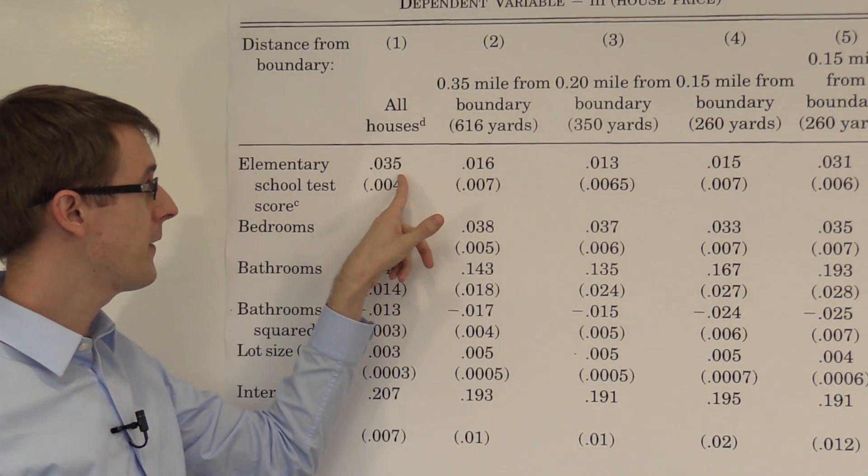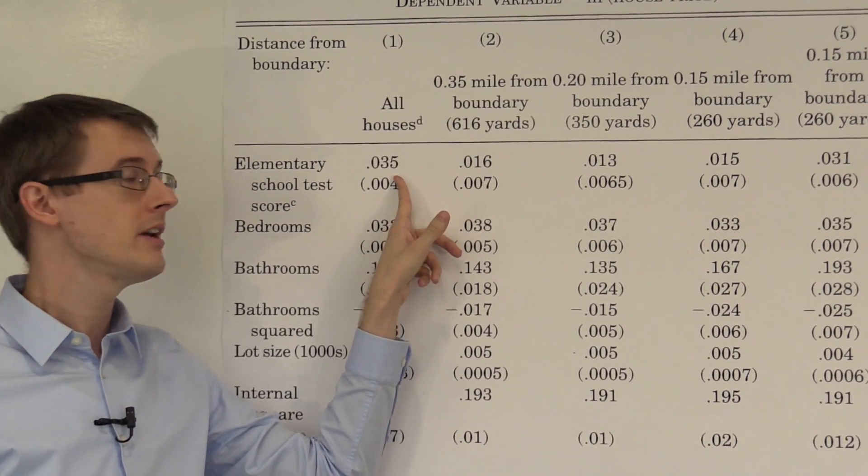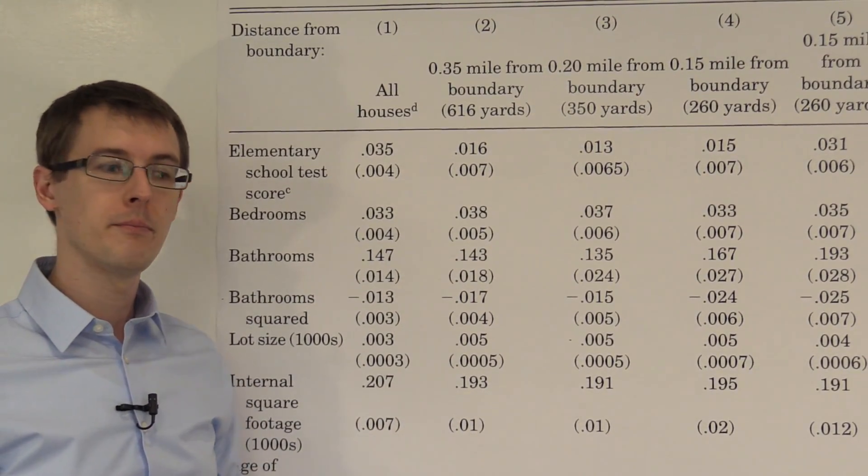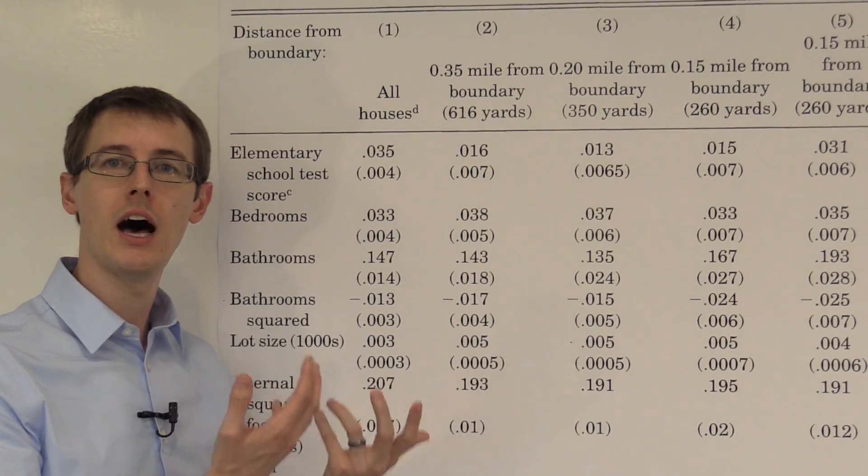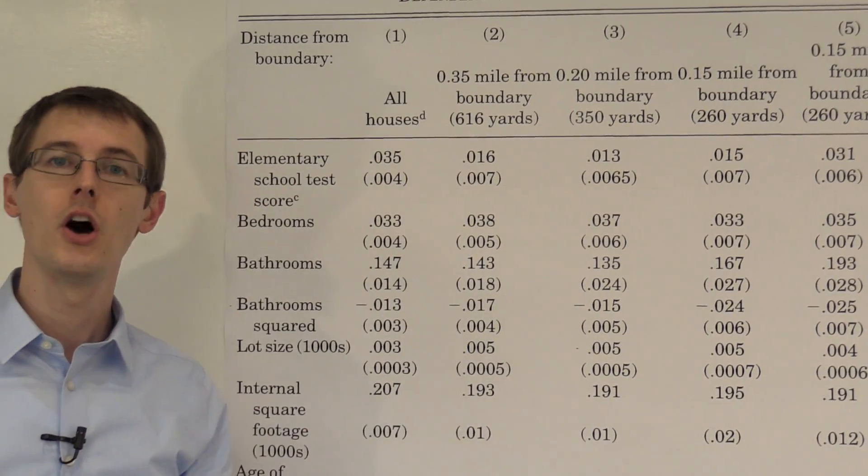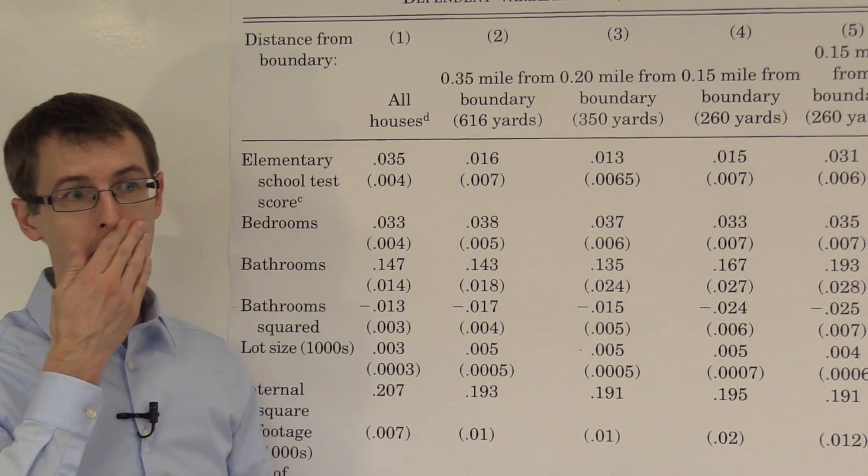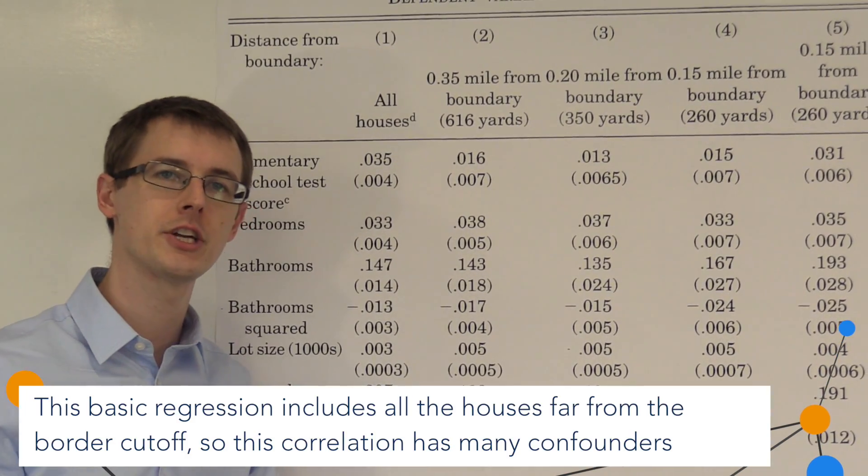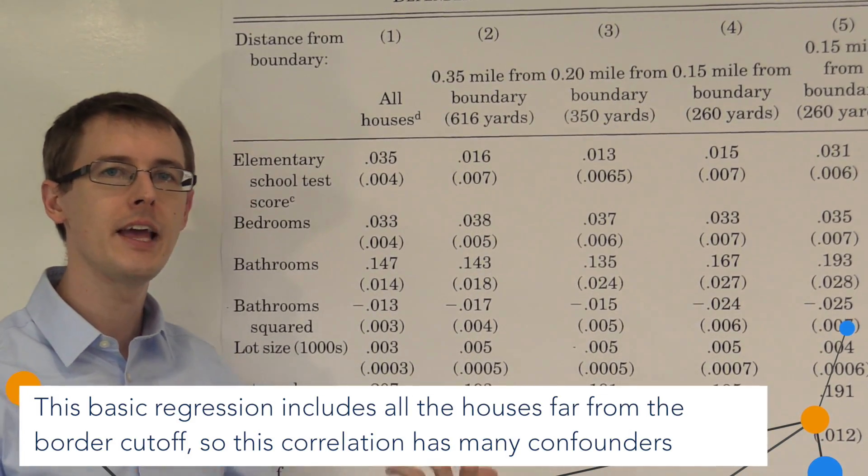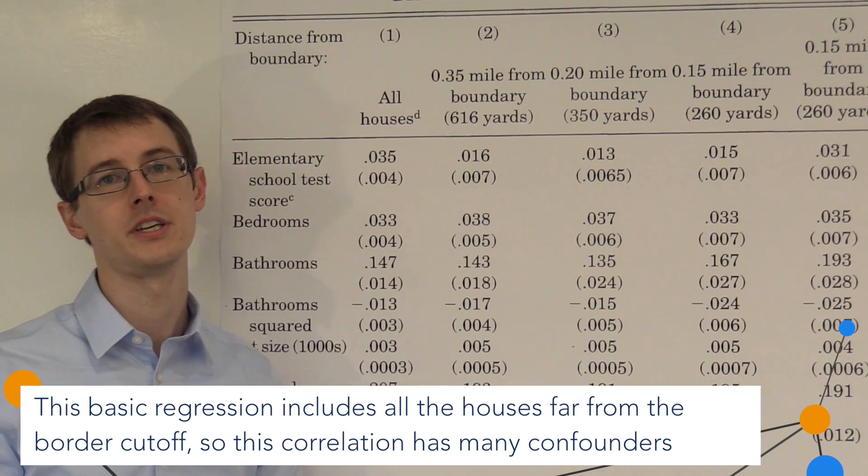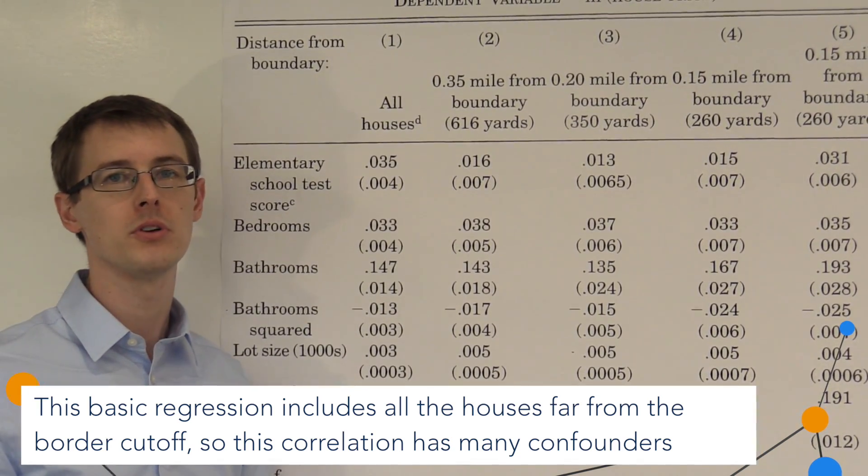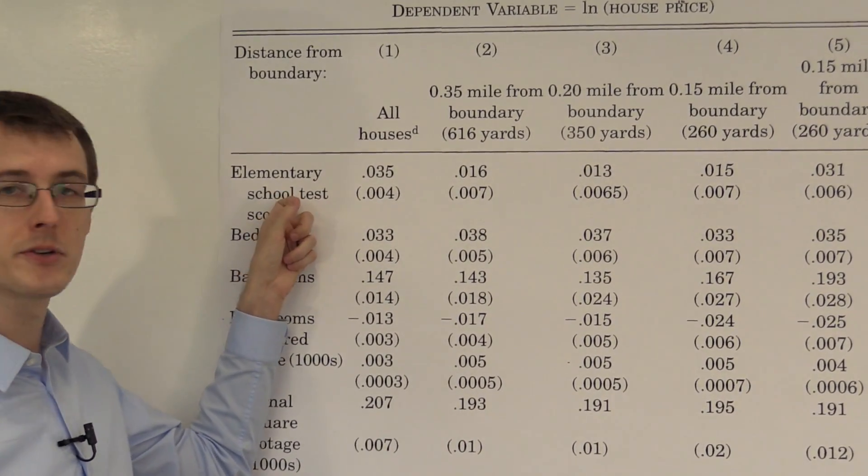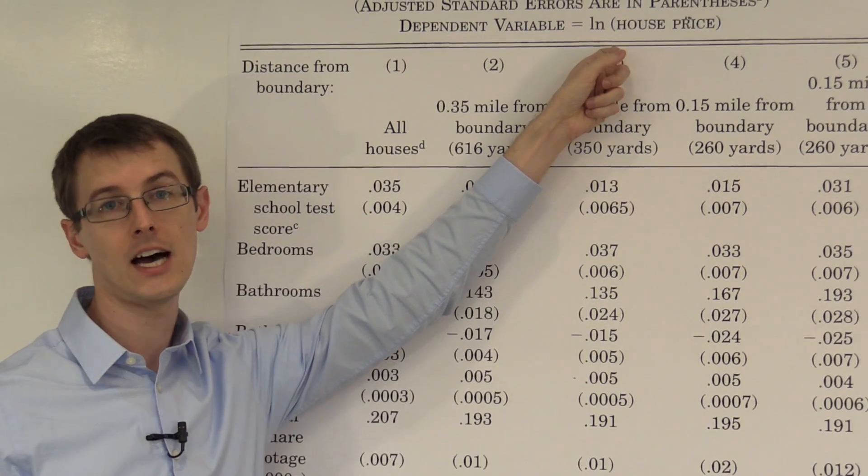And we find that there is a large positive correlation between elementary school test score and house prices. Overall, houses in districts with elementary schools that have large test scores also have high prices. But this is not a causal effect. Just because, as we talked about with regression in general, we're not able to separate out the effect of confounders here. There could be some unobserved variables like other public amenities that are also correlated with elementary school test score and affect house prices.